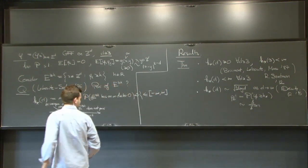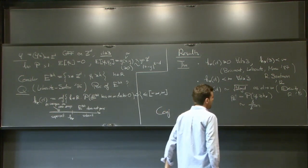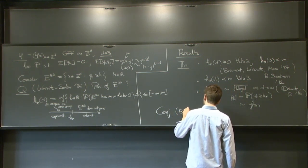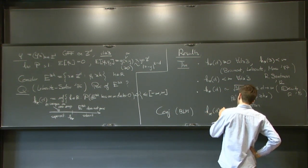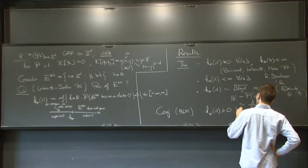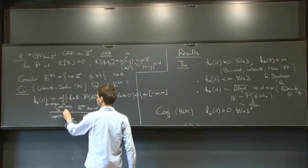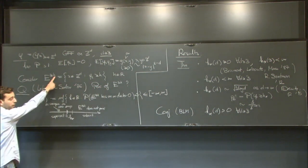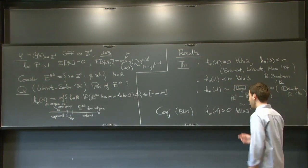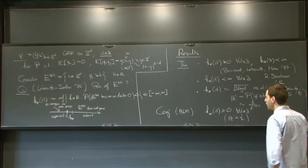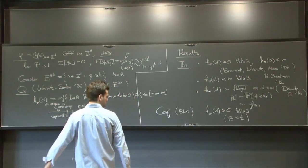So you know that h* sits somewhere on the real line for any dimension. There was a conjecture by Brickmont, Leibovitz, and Mass that in fact h* was strictly positive in any dimension greater or equal to 3. In particular, that would mean that if you look at the sign clusters of the free field — the level sets above and below zero — they would both have an infinite connected component. But this is strictly stronger; it's like saying that the critical density PC is strictly less than half.